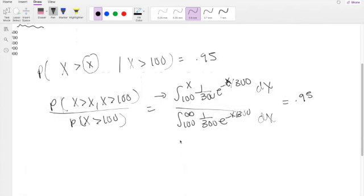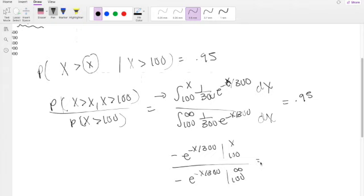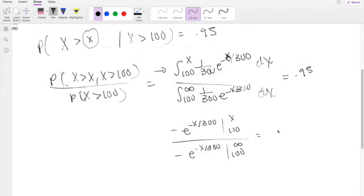So when we take the antiderivative, you get negative e to the negative x over 300, going from 100 to x, divided by negative e to the negative x over 300, going from 100 to infinity. And this is equal to 0.95.